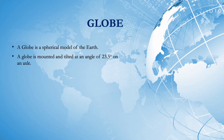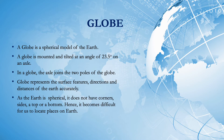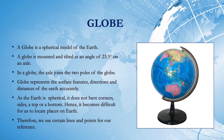Let's discuss some important features of a globe. A globe is a spherical model of the Earth. A globe is mounted and tilted at an angle of 23.5 degrees on an axle. The axle joins the two poles of the globe. A globe represents the surface features, directions, and distance of the Earth accurately. All the blue portions depict the water bodies and the colored portions depict the continents.